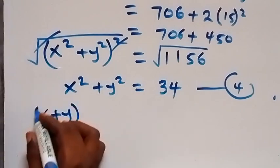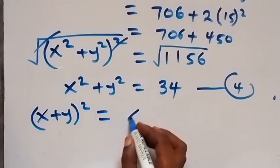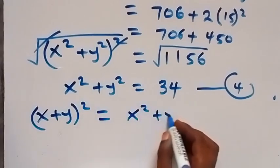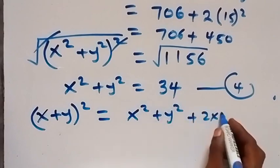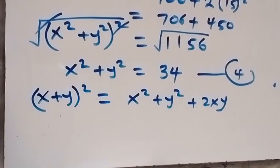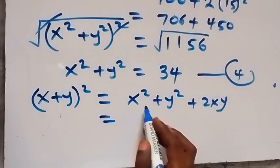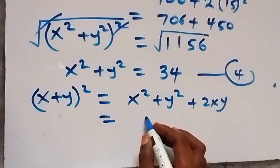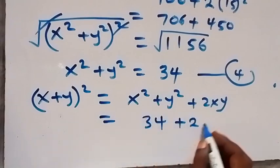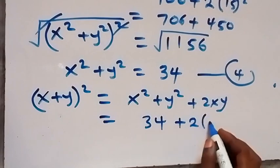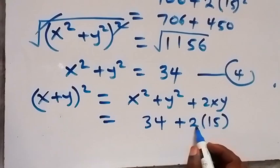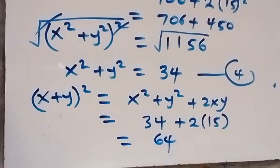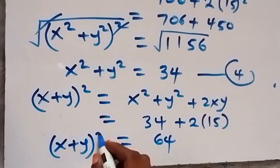Also, from the identity (x + y)², when we expand this we get x squared plus y squared plus 2xy. We want to find x plus y. We already know x squared plus y squared is 34, so we put 34, then plus 2 times xy which is 15, giving us 34 plus 30, which equals 64.